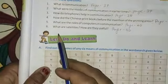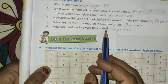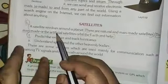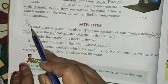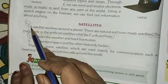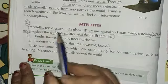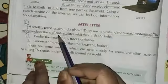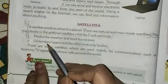Now last question is question number 6, what are satellites and how are they useful? It is in page number 40. Here, satellites. From a satellite here to Earth and help. First, this you will write. And then two points you have to write from this.